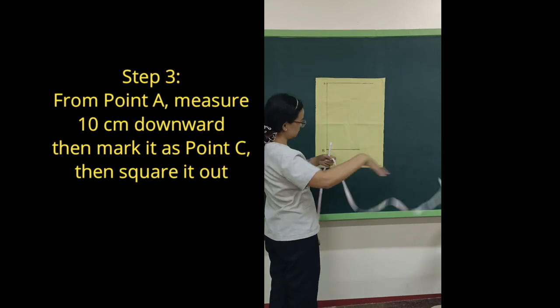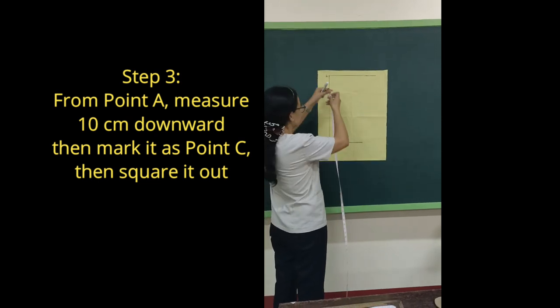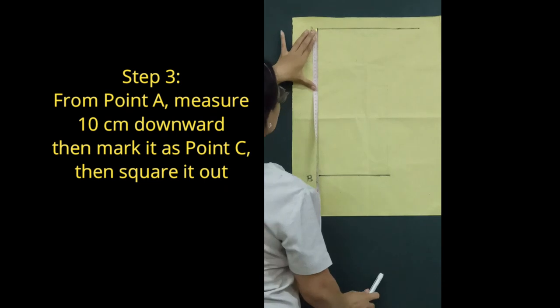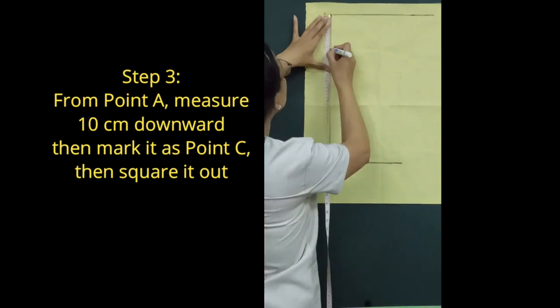Step 3: From point A, measure 10 cm downward. Then mark it as point C. Then square it out.